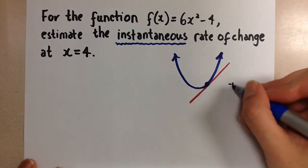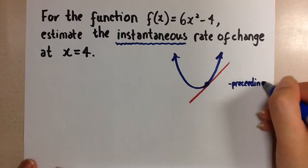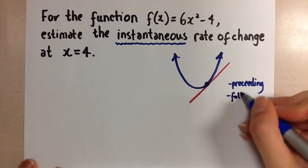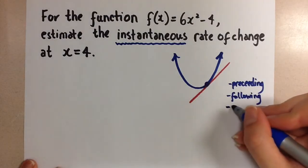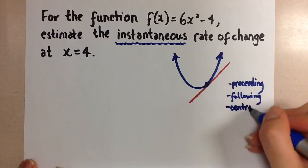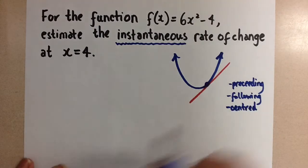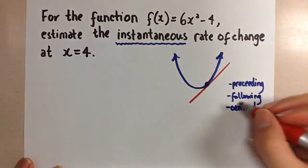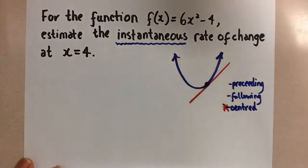Now, we can choose what we call a preceding interval, which is an interval just before x equals 4, a following interval, which is an interval just after x equals 4, or we can use a centered interval, which has the x equals 4 right in the middle. So the best choice is always going to be the centered interval if you're just doing an estimate for the instantaneous rate of change.